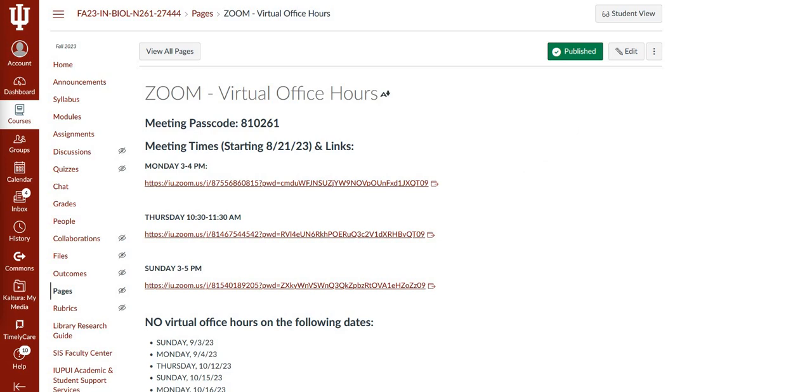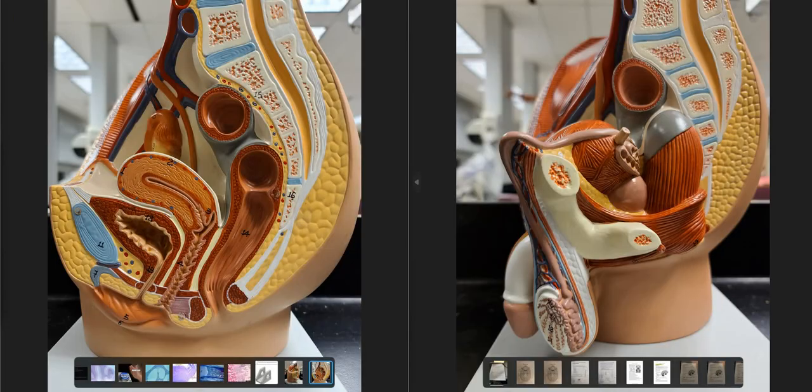All right. So we're going to start off with some big concepts. And the first thing I want to talk about is homology between the female and the male reproductive tract. So this is our model. These images are available on Canvas. What we have on the left is the female reproductive tract. On the right, we have the male reproductive tract.